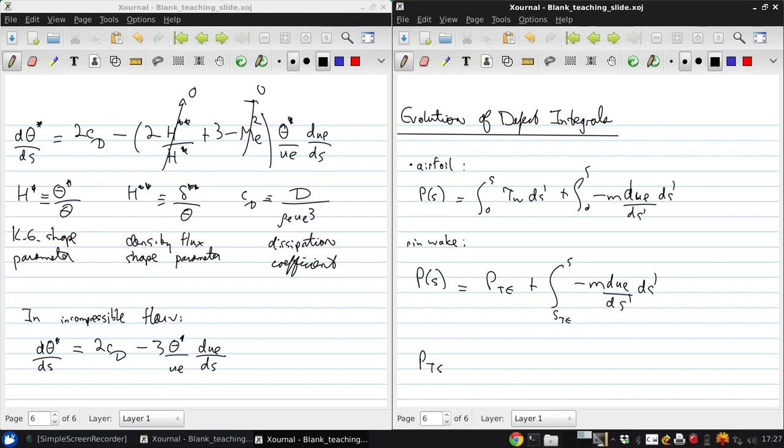And P t e is going to be simply P of s corresponding to the trailing edge on the upper part of the body or airfoil, plus P of s at the trailing edge on the lower part of the body or airfoil.